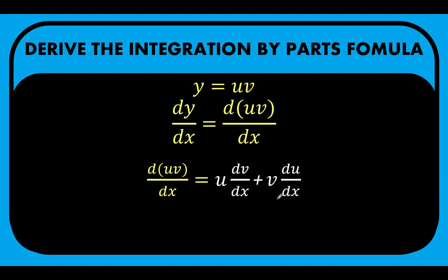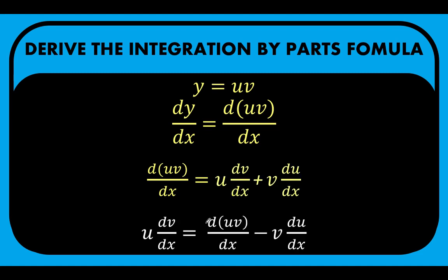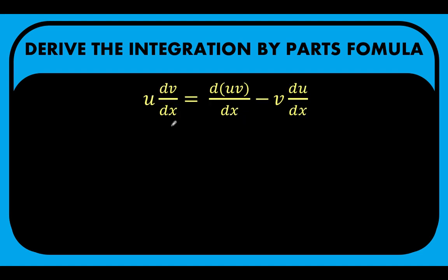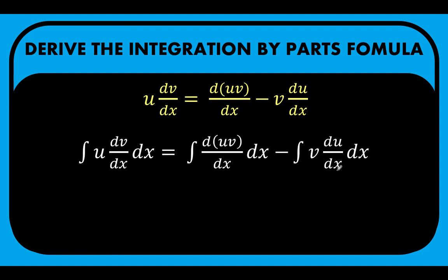Then we can subtract both sides of this equality by v·(du/dx). By rearranging, we arrive at a new form: u times dv/dx equals d(uv)/dx minus v times du/dx. Now let's take the antiderivative of both sides of the equation. The left side gives the antiderivative of u·dv/dx, the first term on the right gives the antiderivative of d(uv)/dx, and the second part gives the antiderivative of v times du/dx.